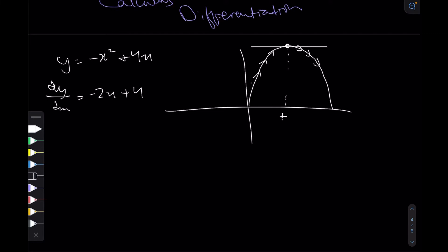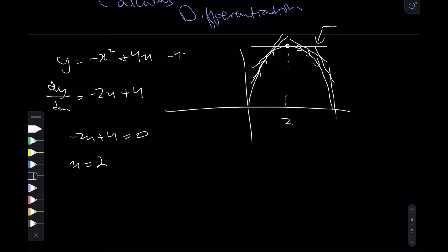Before the turning point the gradient is positive but decreasing, and after it the gradient is negative and becoming more negative. So if we set the differential equal to 0, we get the point where the gradient is 0 — that is, the turning point. So minus 2x plus 4 equals 0, giving x equals 2. At x equals 2, y equals minus 4 plus 8 equals 4, so the turning point is (2, 4). To find any turning point, find the differential and set it equal to 0.